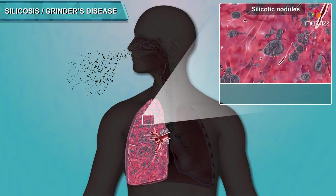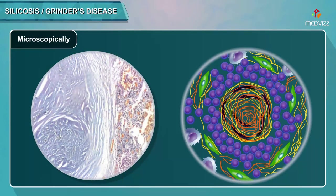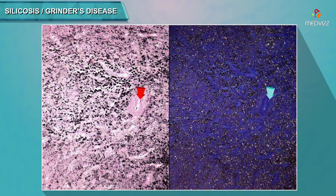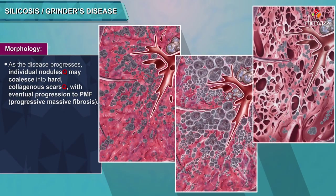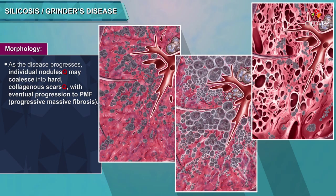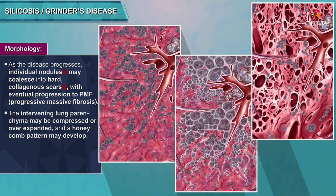Morphology: In early stages, silicotic nodules are tiny, barely palpable, discrete, pale to black (if coal dust is present) nodules in the upper zone of the lungs. Microscopically, the silicotic nodule demonstrates concentrically arranged hyalinized collagen fibers surrounding an amorphous center — a whorl appearance quite distinctive for silicosis. Polarized microscopy reveals weakly birefringent, refractile, needle-shaped silica particles primarily in the center. As disease progresses, individual nodules may coalesce into hard collagenous scars with eventual progression to PMF; the intervening parenchyma may be compressed, overexpanded, or show a honeycomb pattern.